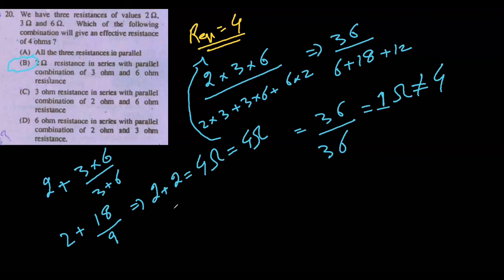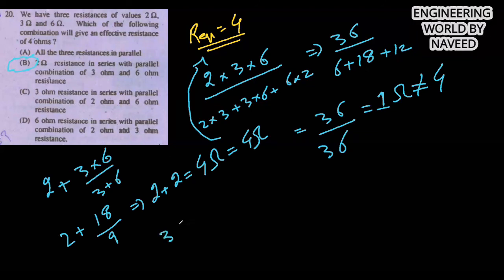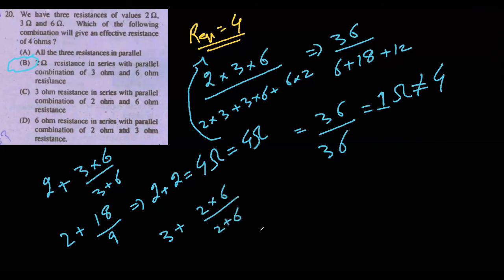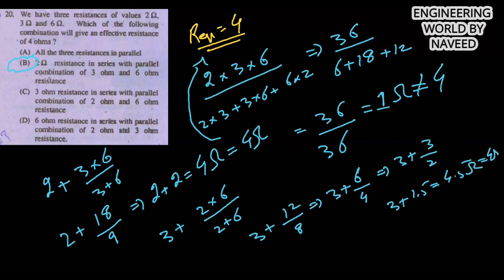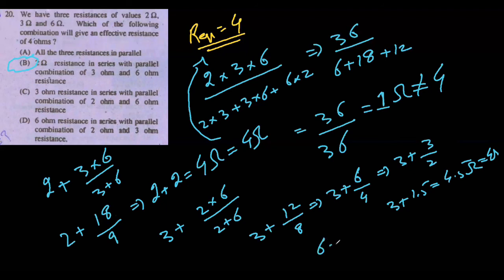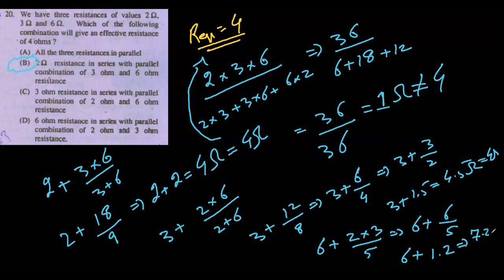Let's also verify the other options. Option C: 3Ω in series with parallel combination of 2Ω and 6Ω gives 3 + 12/8 = 3 + 1.5 = 4.5 ohm, not 4. Option D: 6Ω in series with parallel combination of 2Ω and 3Ω gives 6 + 6/5 = 6 + 1.2 = 7.2 ohm, not 4. So option B is confirmed. That's the end of this video, thanks for watching. Allah Hafiz.